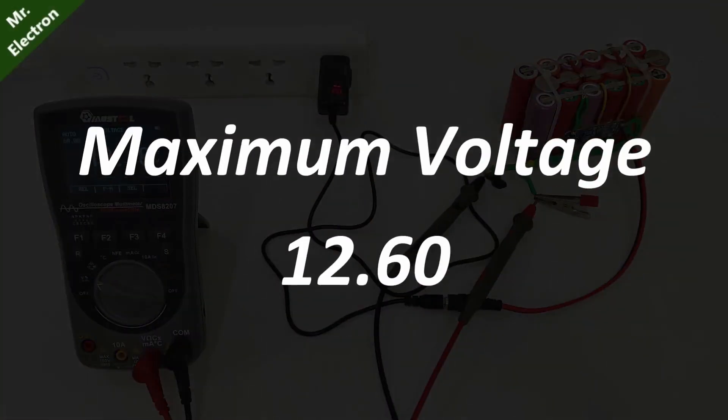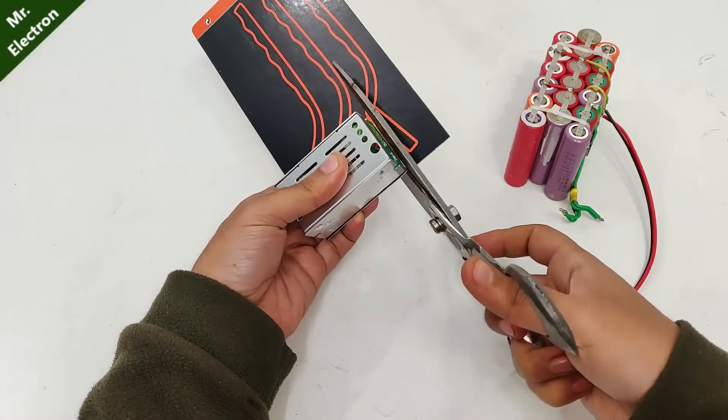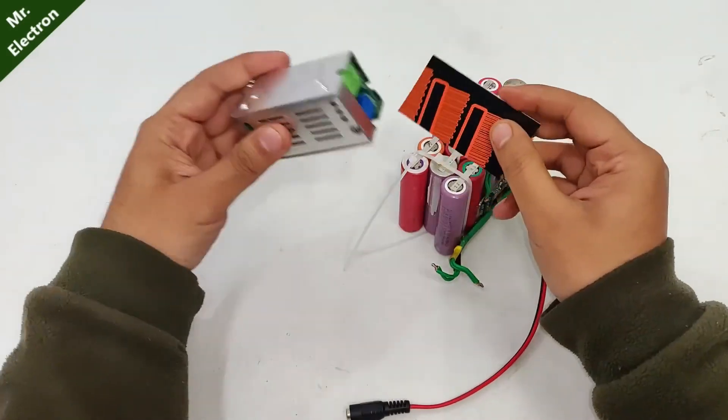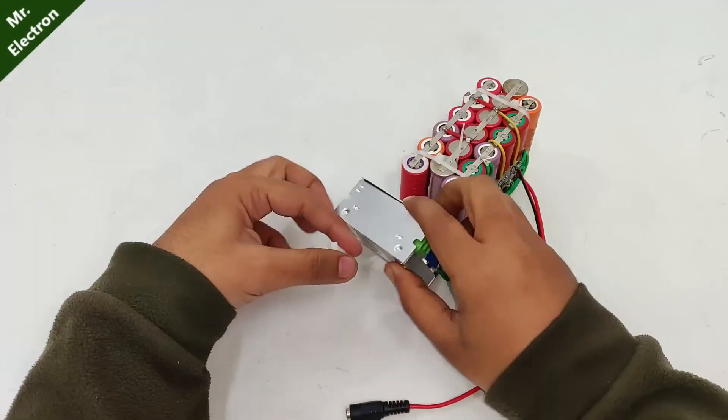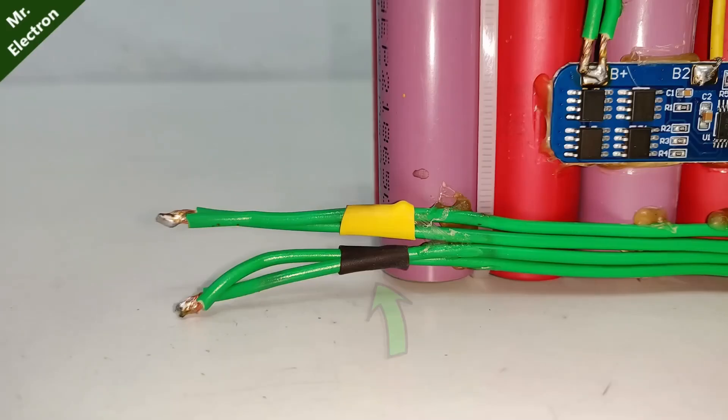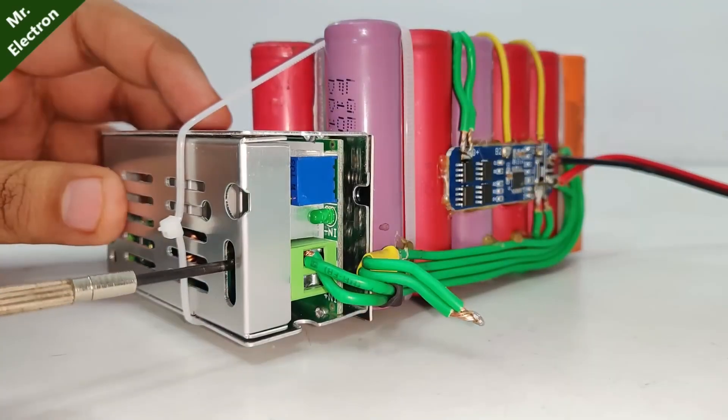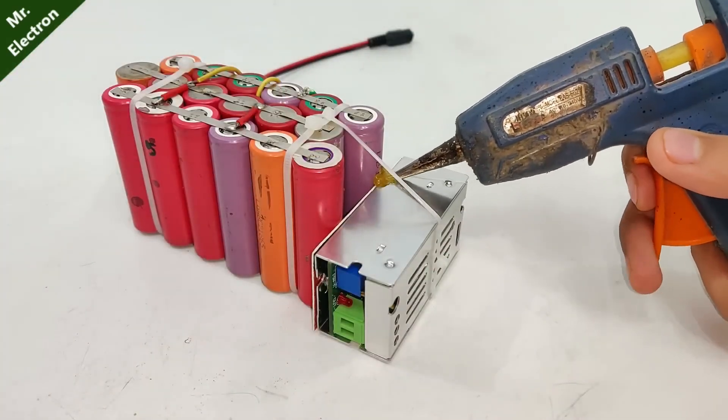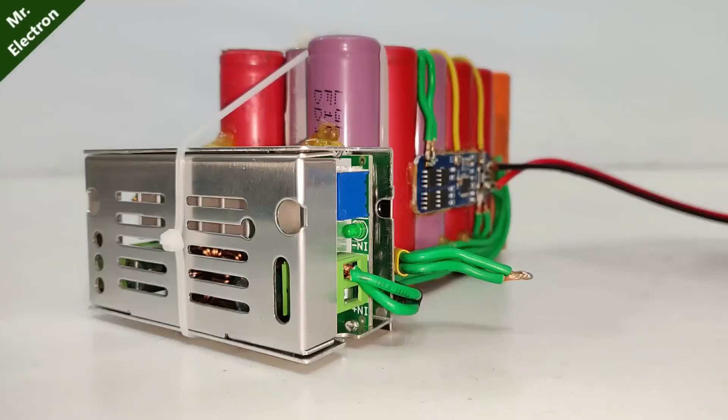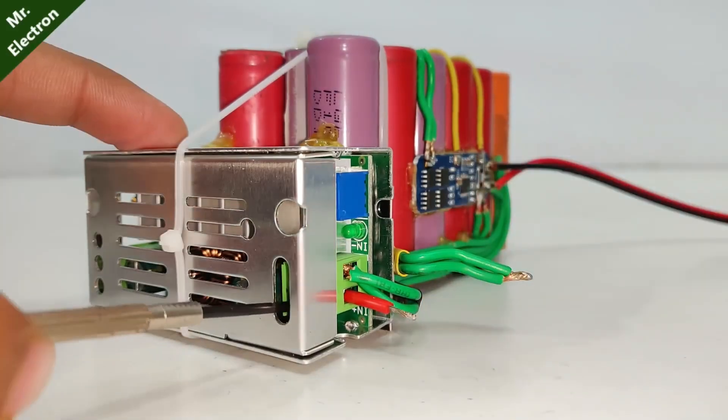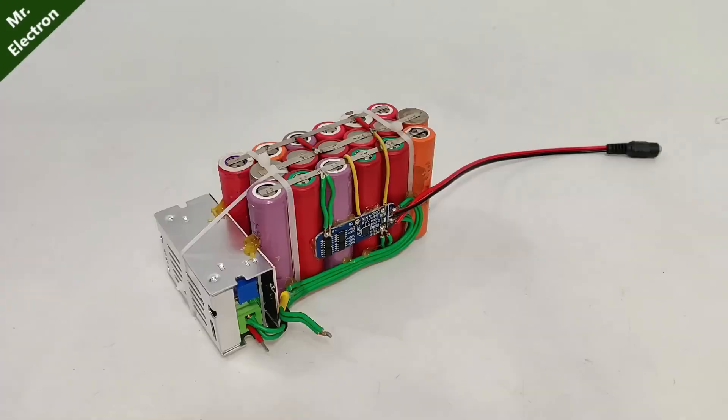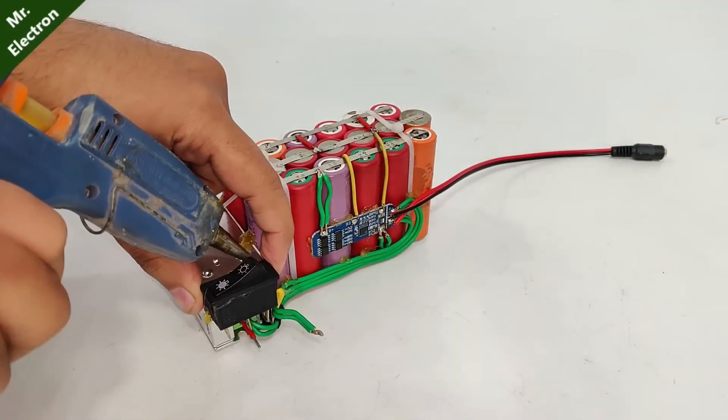Next, what you will need is a separator between the buck-boost module and your lithium-ion batteries to prevent the heat transfer. Next, zip tie the module and the batteries together. After that, take the black pair and connect it to the negative input terminal. Next, use your hot glue gun to fix everything. Next, you will need a red wire for connecting to the positive input side of the buck-boost module. After that, take a two ampere switch and hot glue it to your buck-boost module as shown.